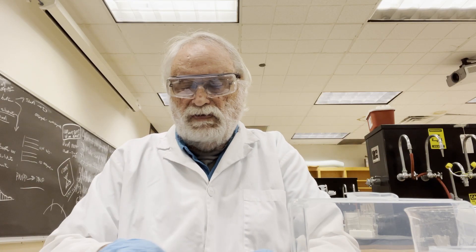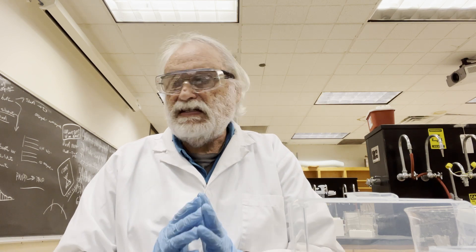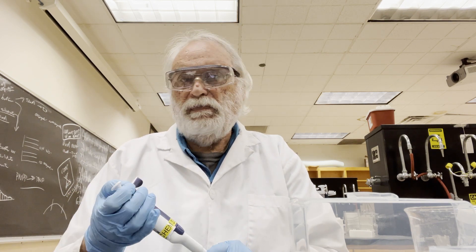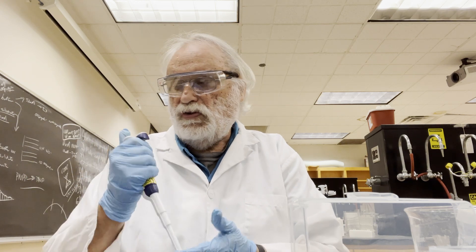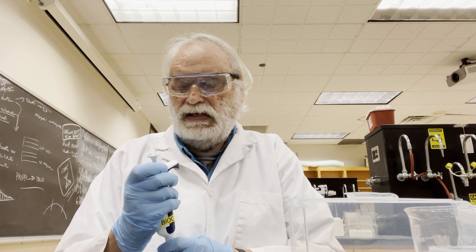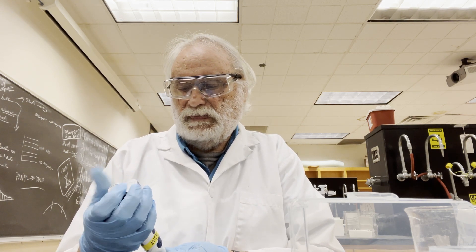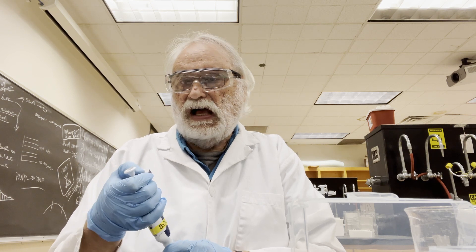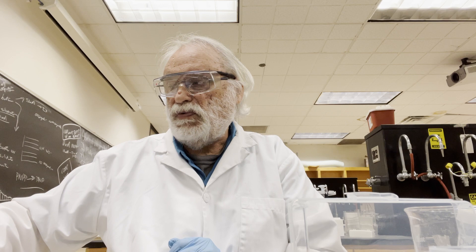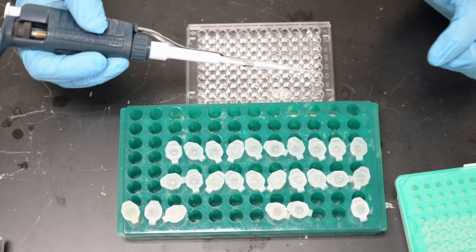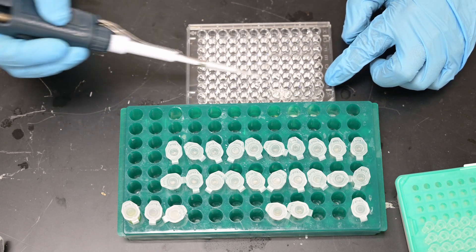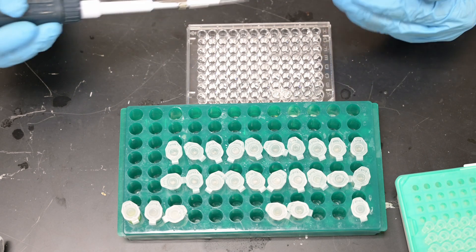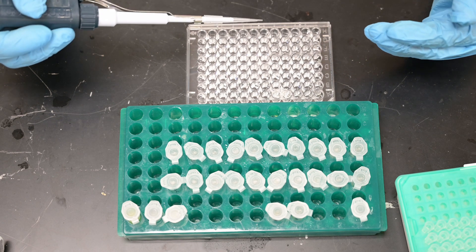The next step is to add some PNP standard to the wells. First we need to set our pipette to the right volumes. Each of these wells currently has 20 microliter samples in them, and we're going to be adding 200 microliters of reagent to each one. But first we'll start by making our standard curve dilutions — we'll add 110 microliters of buffer into D2, D3, D4, and D5.